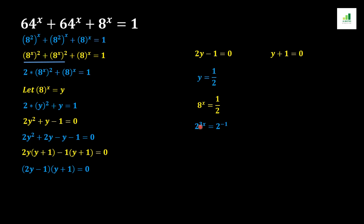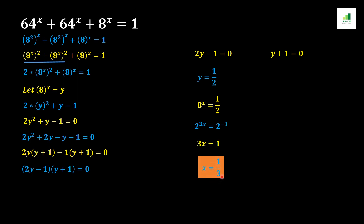Since y equals 8 to the power x, and 8 can be written as 2 to the power 3, we get 2 to the power 3x equals 1 over 2, which is 2 to the power minus 1. By the basic rule of algebra, if two values are equal in magnitude their powers are also equal, so 3x equals minus 1, giving x equals 1 over 3. This is our first answer.